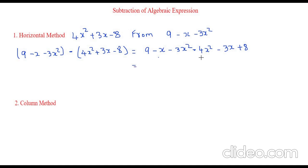Let's see the x square term first. We have minus 3x square and minus 4x square. Let's group this together. And then we have x terms which is minus x and minus 3x. And then we have the constants, that is plus 9 and plus 8.